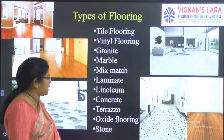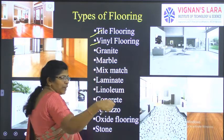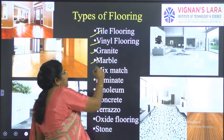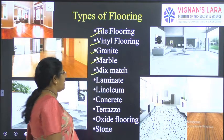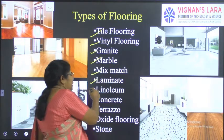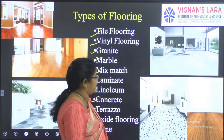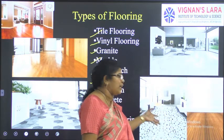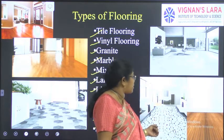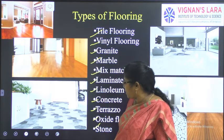These are the 10 types of flooring we are going to see: tile flooring (ceramic tiles and porcelain tiles), vinyl flooring, granite, marble, mix and match, laminate, linoleum, concrete, terrazzo, oxide flooring, and stone flooring. You can see different types — wooden or linoleum, laminate flooring, vinyl flooring, stone flooring, marble flooring, and different types of tile flooring.